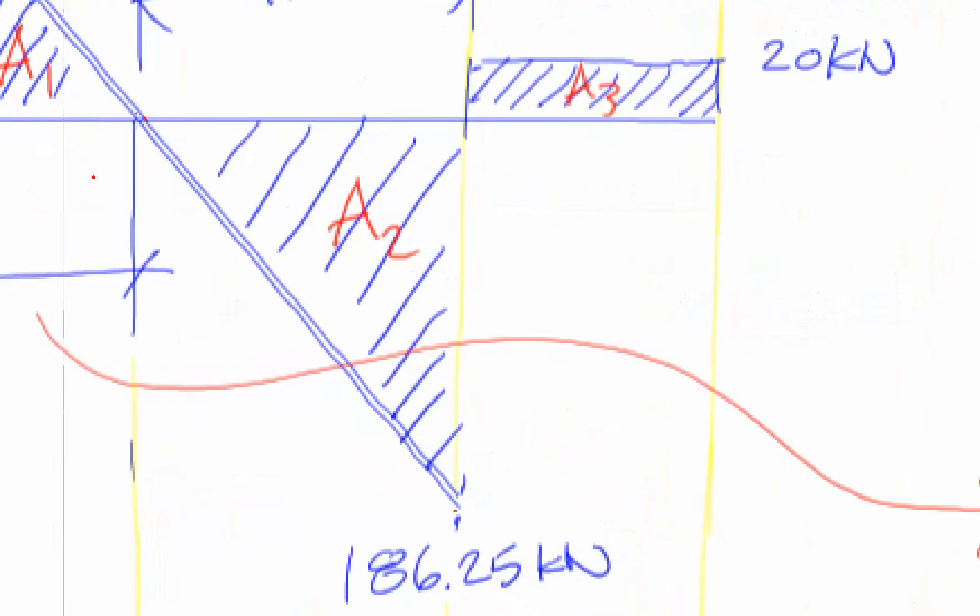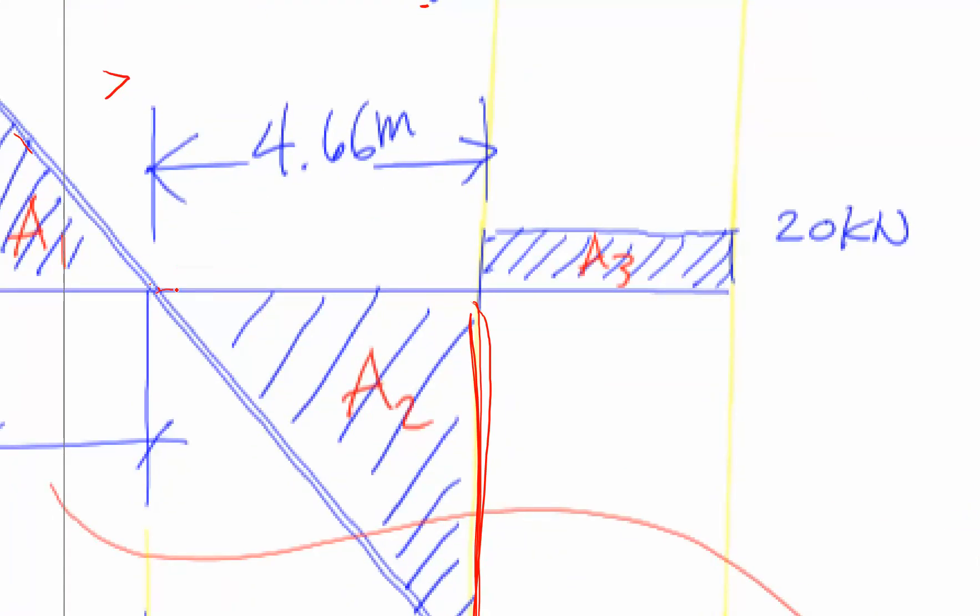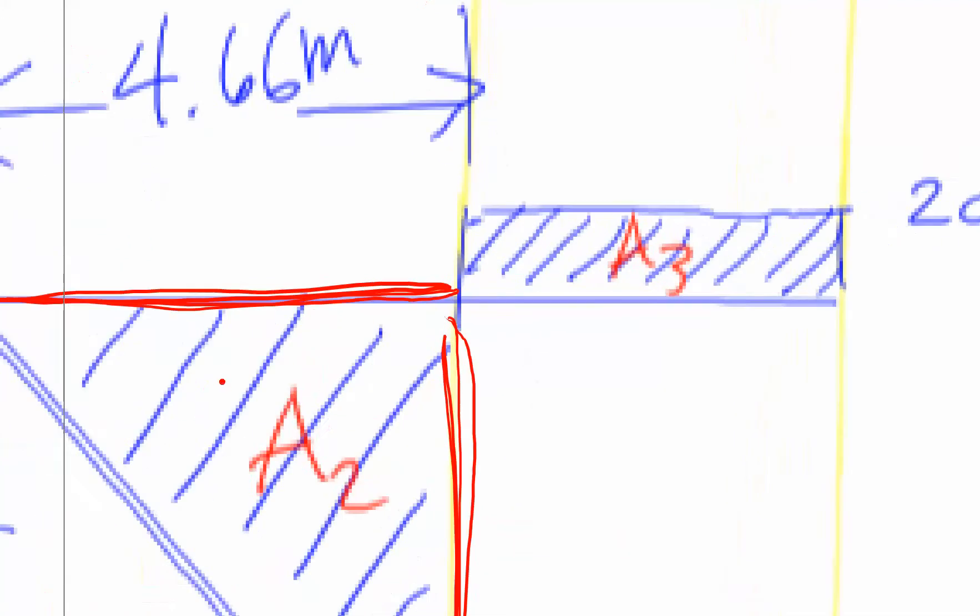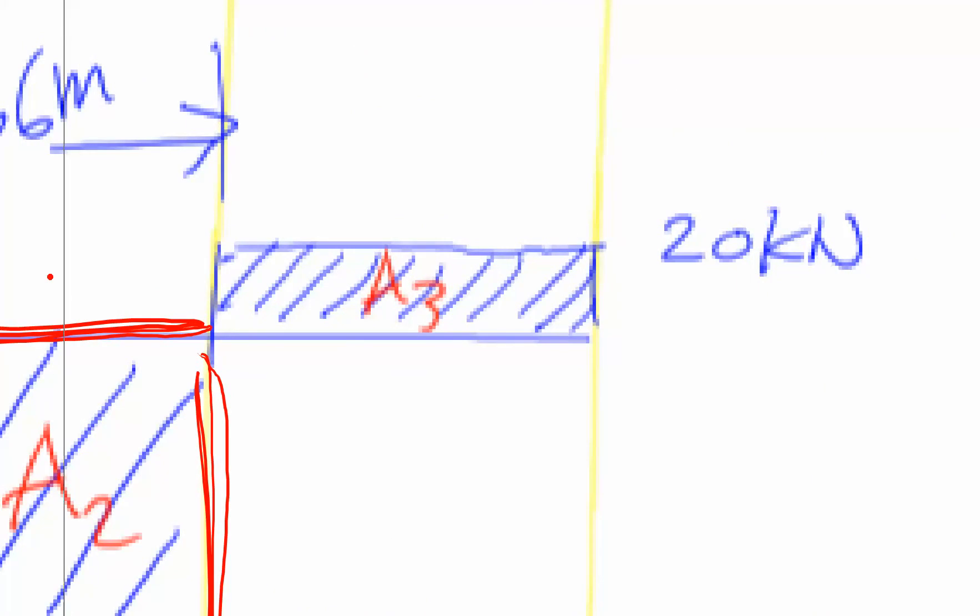We know it's positive because it's above. We next know that this area is negative. What is the height? Well, the height is 186.25 because it's the height here. What is the base? The base is 4.66, right? Eight meters minus 3.33 is equal to 4.66. So right here is one-half base times height.